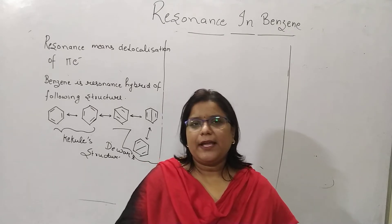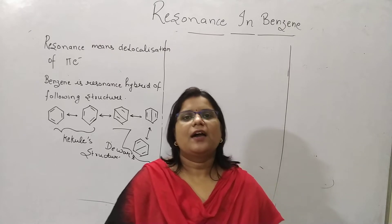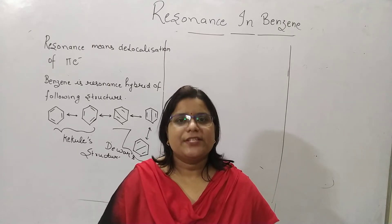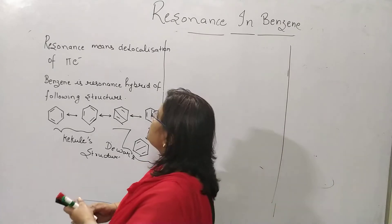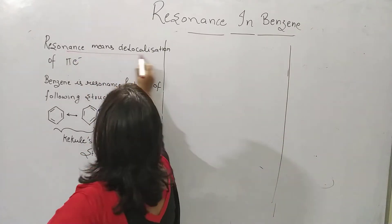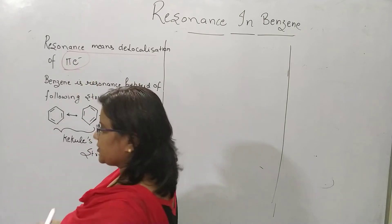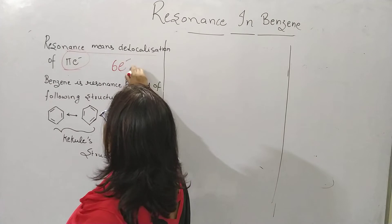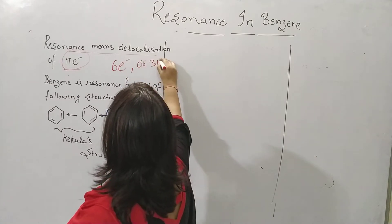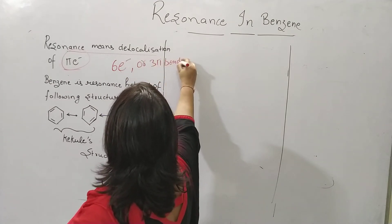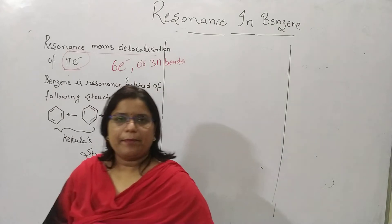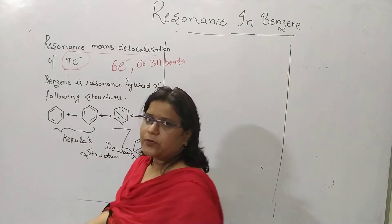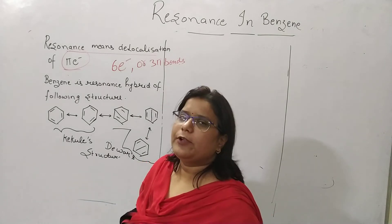These pi electrons or pi bonds are continuously rotating in the benzene ring. So resonance means the delocalization of the pi electrons. Benzene has six pi electrons or three pi bonds. Benzene is the resonance hybrid of the following structures.